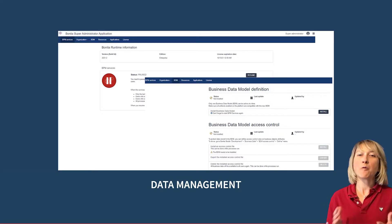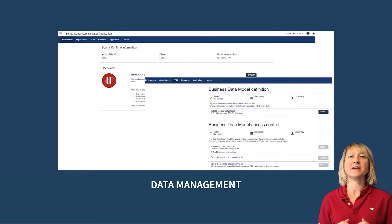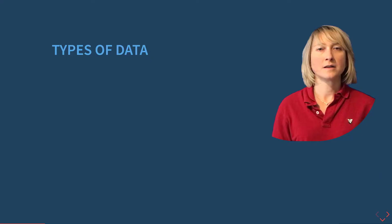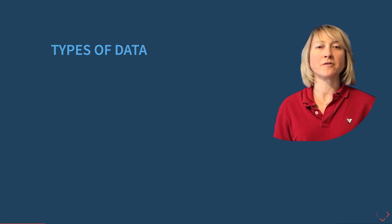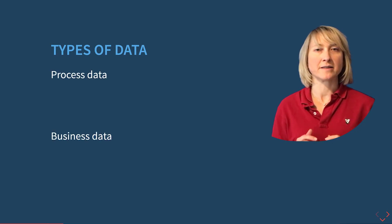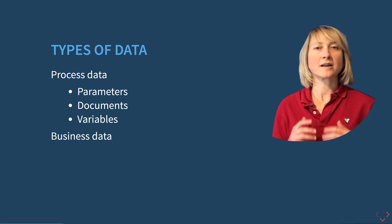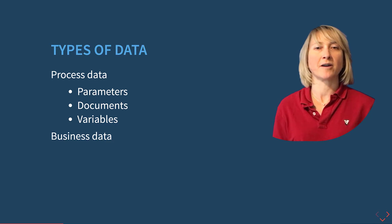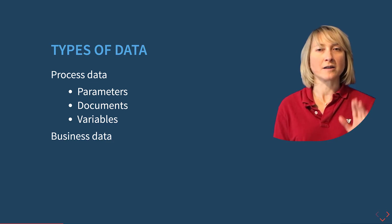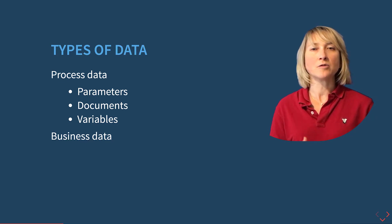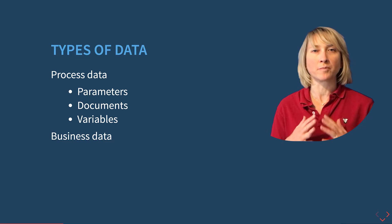In this chapter, I will talk about the different types of data and in particular the modeling of business data. Bonita manages two types of data: process and business data. Process data can be local variables, parameters, documents, or process variables. These types of data are specific to a process, a case, or even a task, and are mainly used to manage and retrieve temporary data.